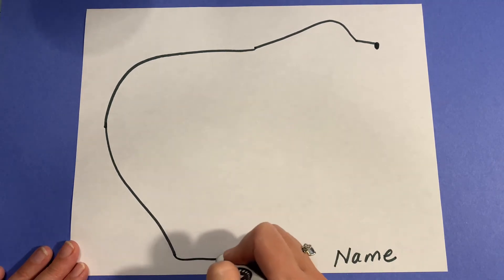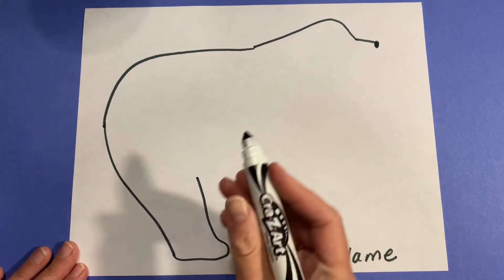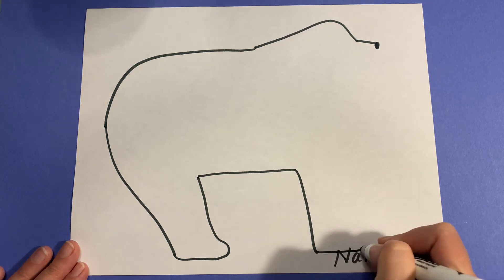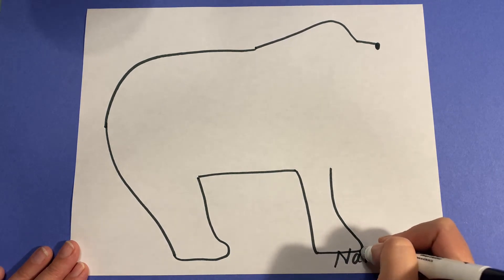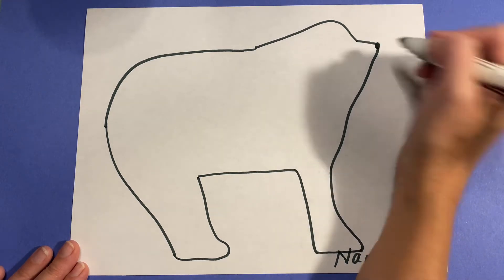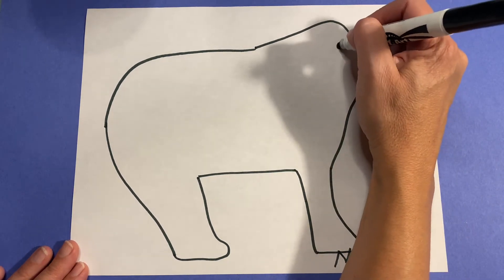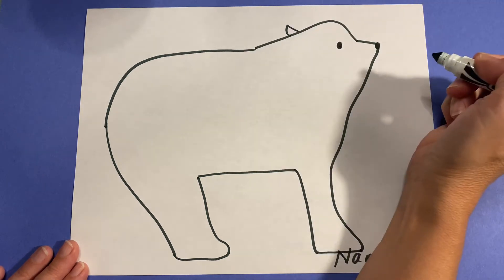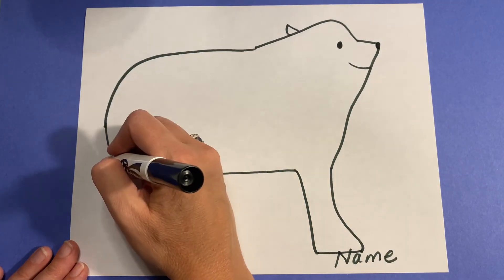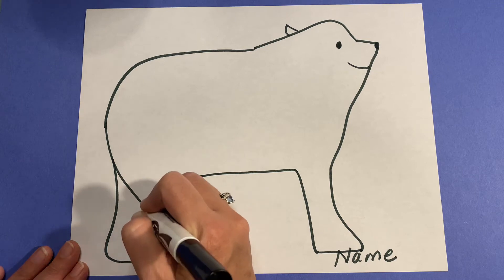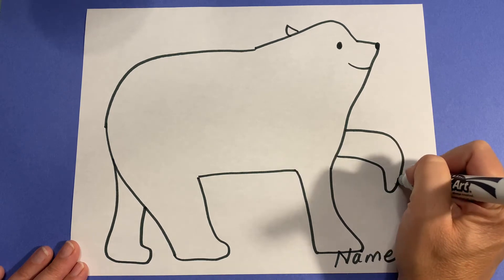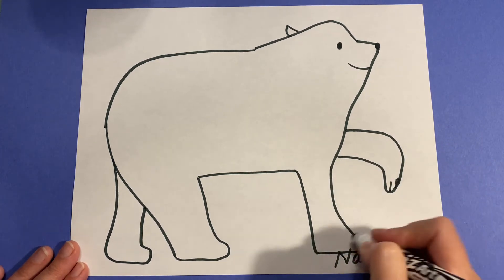And I'm going to draw one of his back paws. I'm going to continue this line up his chest and back to his nose. I'll give a few details here and his tail.